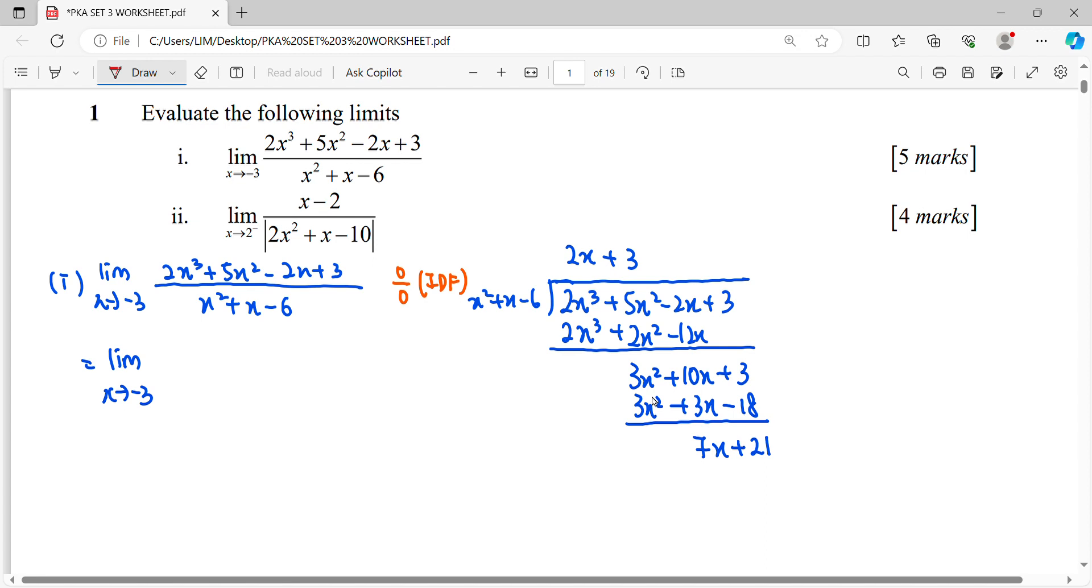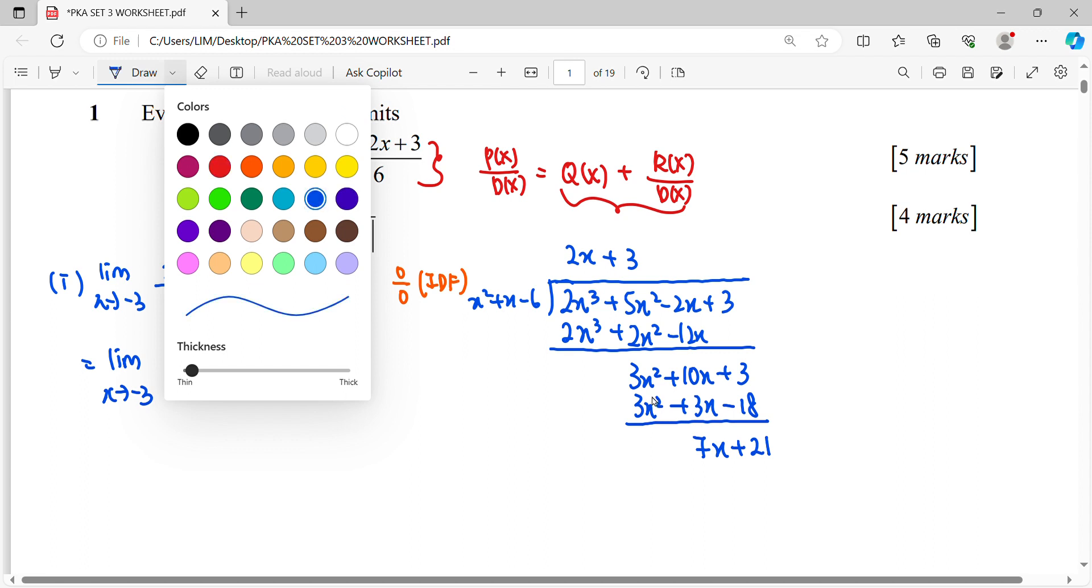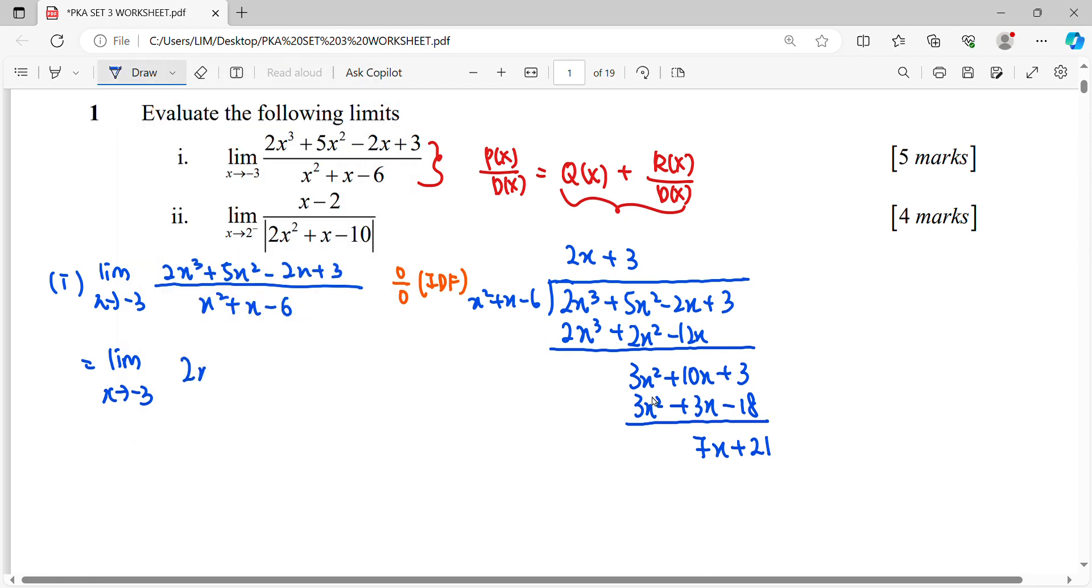Since we're doing polynomial over a divisor, the answer will be the quotient plus remainder over the divisor. We express this long division result as: the quotient 2X plus 3, plus the remainder 7X plus 21 (which we can factor out as 7 times X plus 3), over the divisor.